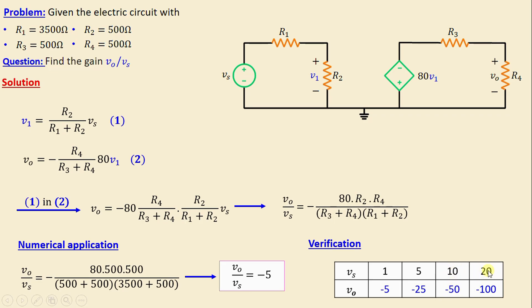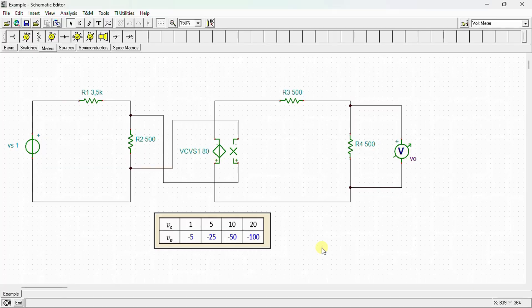when vs = 10V, vo = -50V; and when vs = 20V, vo = -100V. After completing the calculation, we conduct the simulation using SPICE to verify our results.